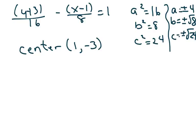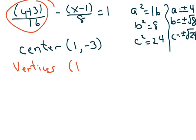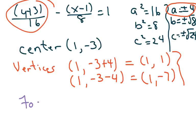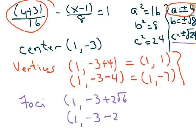Now I write down all the pertinent information. My center is (1, negative 3). For my vertices, since y comes first, I write down 1 and negative 3, adding and subtracting 4 to the y: that gives vertices at (1, 1) and (1, negative 7). For my foci, I copy my center and add and subtract c: square root of 24 is the same as 2 root 6, so foci are at (1, negative 3 plus 2 root 6) and (1, negative 3 minus 2 root 6).